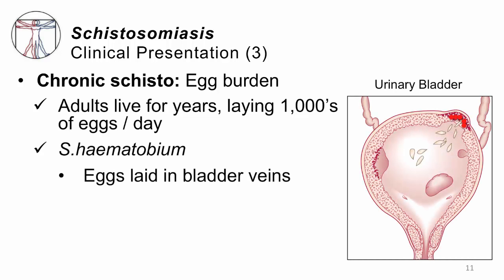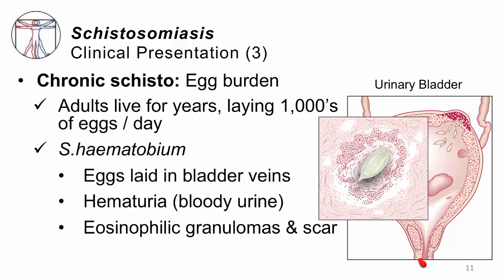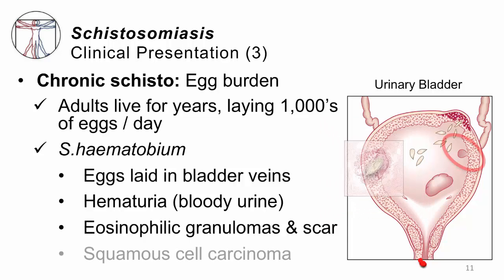In the case of Schistosoma hematobium, most of the eggs are laid in the veins of the bladder and burrow their way out through the bladder wall, causing a variety of problems. First, where the eggs leave the bladder wall, you can have bleeding — hematuria, or bloody urine, is a leading issue. Second, some eggs do not make their way out; they get stuck in the wall of the bladder. The body responds by bringing eosinophils and creating granulomas, which can cause scarring. A scarred urinary bladder may not work as well as it should.